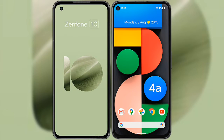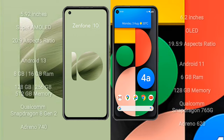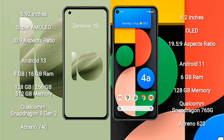I will compare the new Asus Zenfone 10 with Google Pixel 4a. Asus Zenfone 10 comes with a 5.92-inch Super AMOLED display and a 20:9 aspect ratio. Google Pixel 4a comes with a 6.2-inch OLED display and a 19.5:9 aspect ratio.